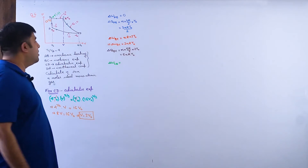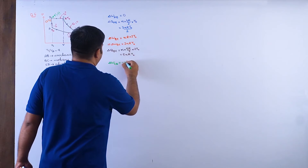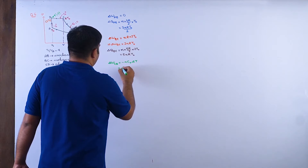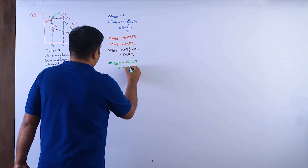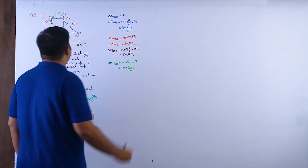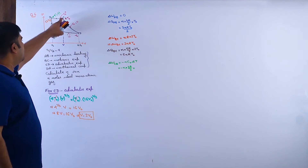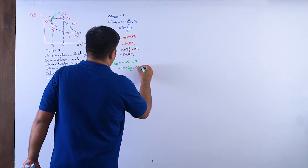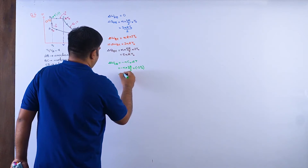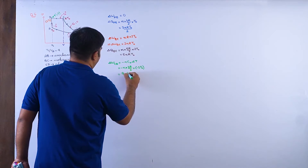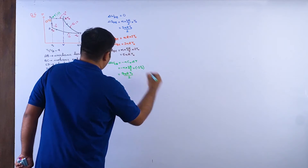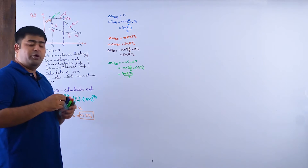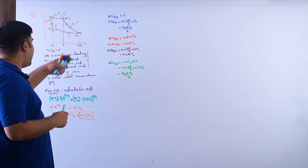Delta W_CD for the adiabatic step: W = −n·C_V·ΔT = −n·(3R/2)·ΔT. The temperature changes from 4T_not to T_not, so ΔT = −3T_not. Therefore, W_CD = 9nRT_not/2. And Q_CD = 0, so nothing more to compute for that step.